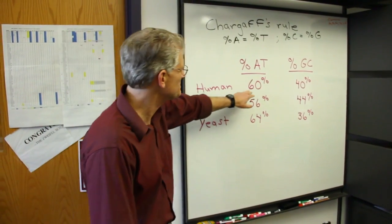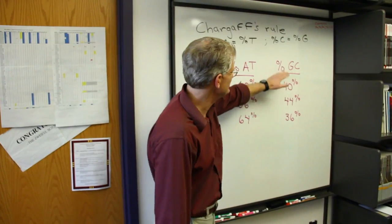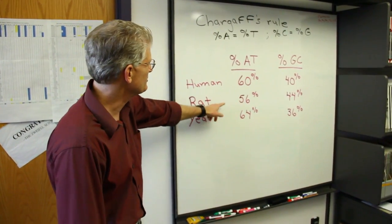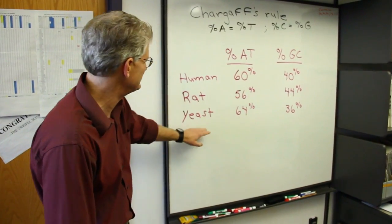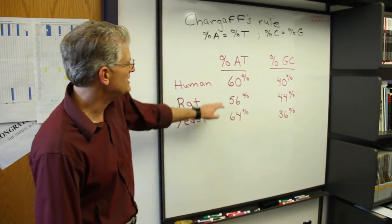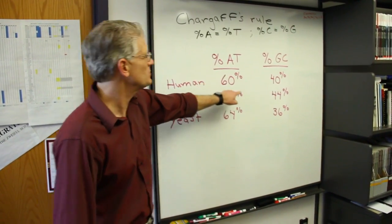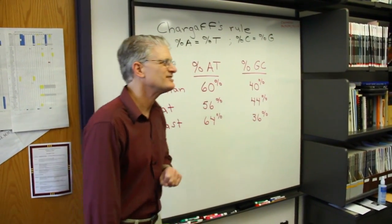In a human, for instance, 60% of the nucleotides are A's and T's, 40% are G's and C's, and you'll see it does vary though. The rat is 56% A's and T's, yeast is 64% A's and T's. So within a human, 30% are A's, 30% are T's, 20% are G's, 20% are C's.